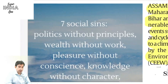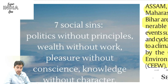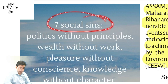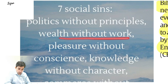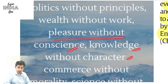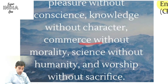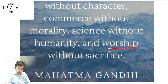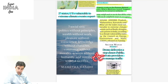Gandhi Ji's Seven Social Sins are very useful in ethics, and if you study Gandhi Ji well, you can use his teachings across GS1, GS2, GS3, GS4, ethics, essays, and interviews. The Seven Social Sins are: politics without principles, wealth without work, pleasure without conscience, knowledge without character, commerce without morality, science without humanity, and worship without sacrifice. Knowledge without character means being knowledgeable is not enough — you must also have character and responsibility. These can be used effectively in ethics answers.